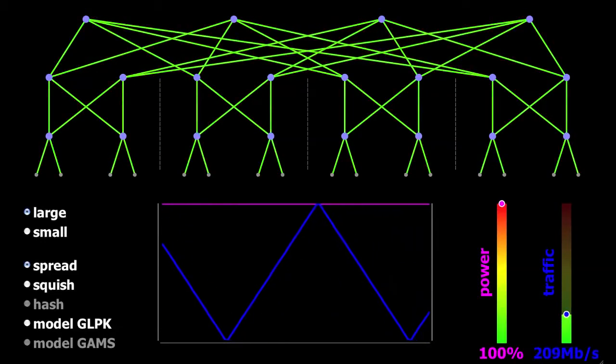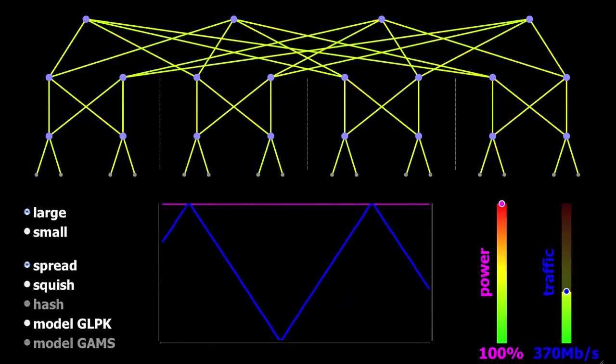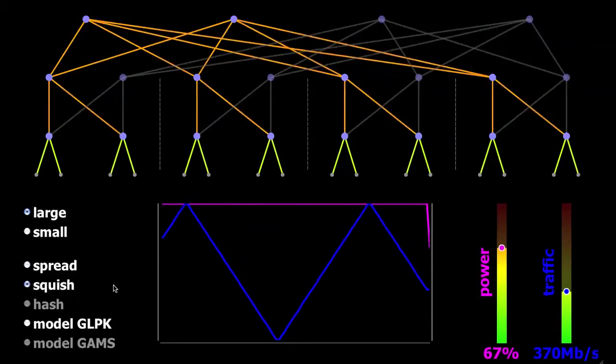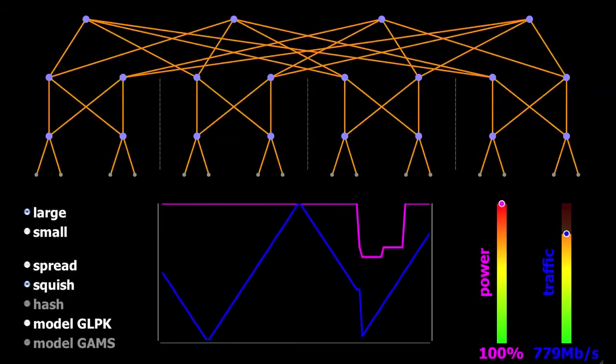We're trying to do the opposite with Elastic Tree. We'll turn it on, and now you notice a major difference. The network power follows the traffic as links are turned on and off.